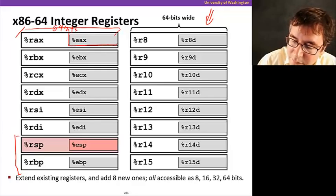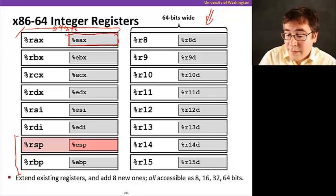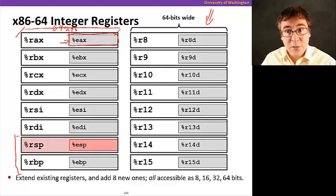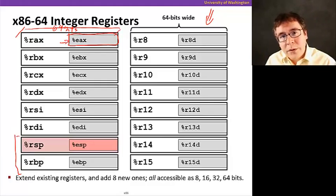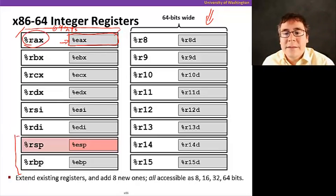For example, EAX, which is also present in IA32, is the low order 32 bits of register RAX in X86-64. So, one way to think about it is that we extend existing registers to 64 bits, plus adding eight new registers.